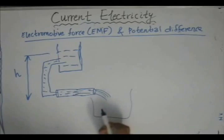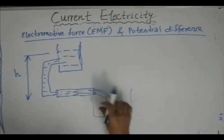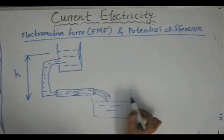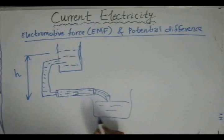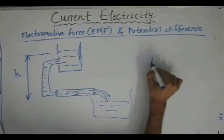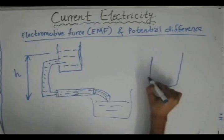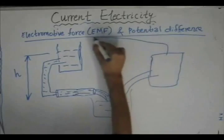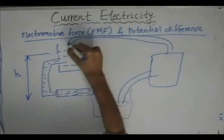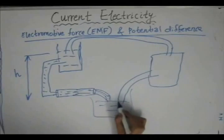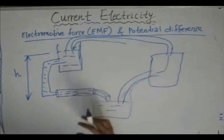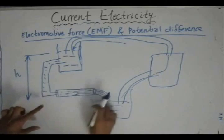Now suppose we want the flow of water to be steady. In order to make this flow steady, the amount of water coming out of this tube should be filled back into the tank. We can do this by using some external agency — suppose a motor — whose job is to pass the same amount of water back into the tank, so that the pressure difference between the two ends always remains the same.